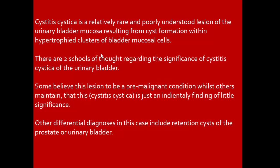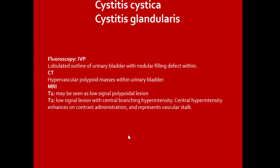Cystitis glandularis. Cystitis cystica are relatively rare lesions of the urinary bladder mucosa resulting from cyst formation within hypertrophied clusters of bladder mucosal cells. Some believe this lesion to be a premalignant condition, while others maintain cystitis cystica is an incidental finding of little significance. On IVP: lobulated outline of the urinary bladder with nodular filling defect. On CT: hypervascular loboid masses. On MRI T1: low signal loboid lesion; T2: low signal lesion with central branching hyperintensity enhancing with contrast, representing vascular stalk.